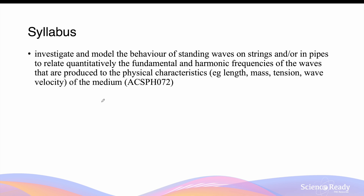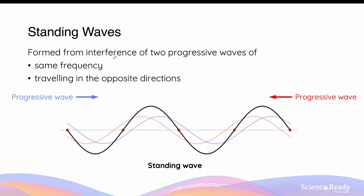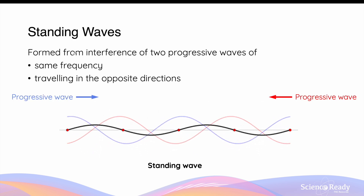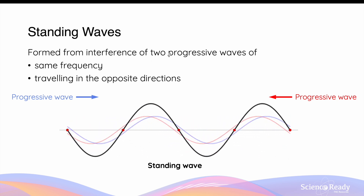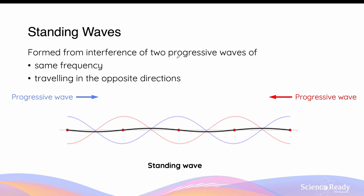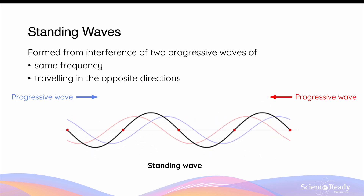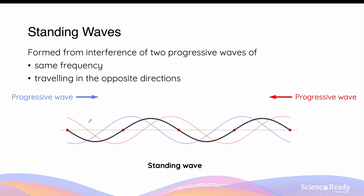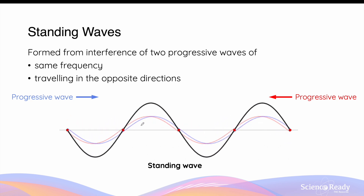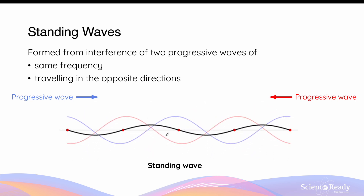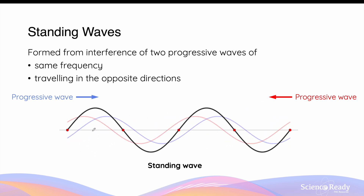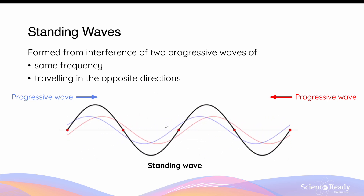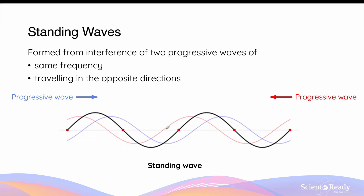This video is on the concept of standing waves or stationary waves, specifically for pipes. By way of review, standing waves are formed from the phenomenon of interference of two progressive waves. Progressive waves are ordinary waves that propagate in a certain direction, and standing waves are only formed if the two progressive waves have the same frequency and travel in opposite directions. Unlike progressive waves, the standing wave oscillates up and down but does not propagate — which is why it is known as a standing wave or stationary wave.